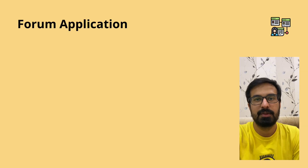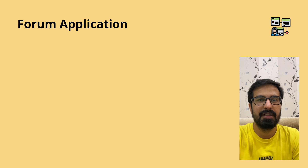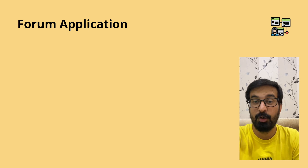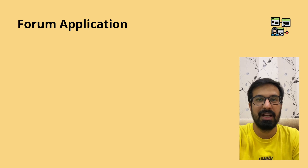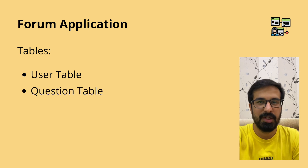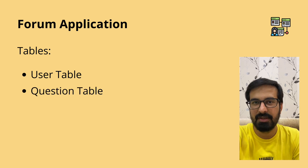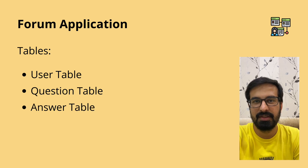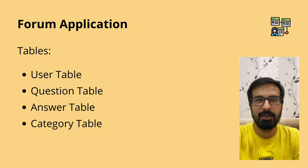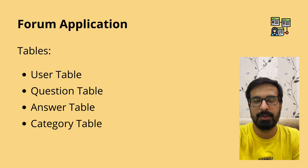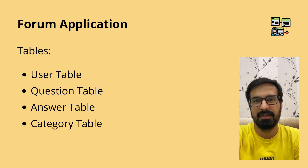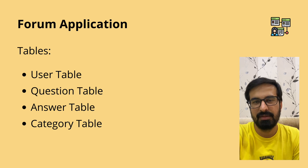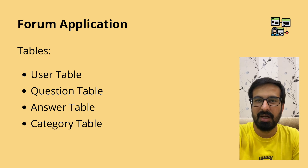In this example we'll be designing database tables for a forum application. We'll have a user table, a question table to store questions asked by users, an answer table to store answers for those questions, and a category table to categorize the questions. In most forum applications, whenever you ask a question you can categorize it — for example, Java, C, or C++.